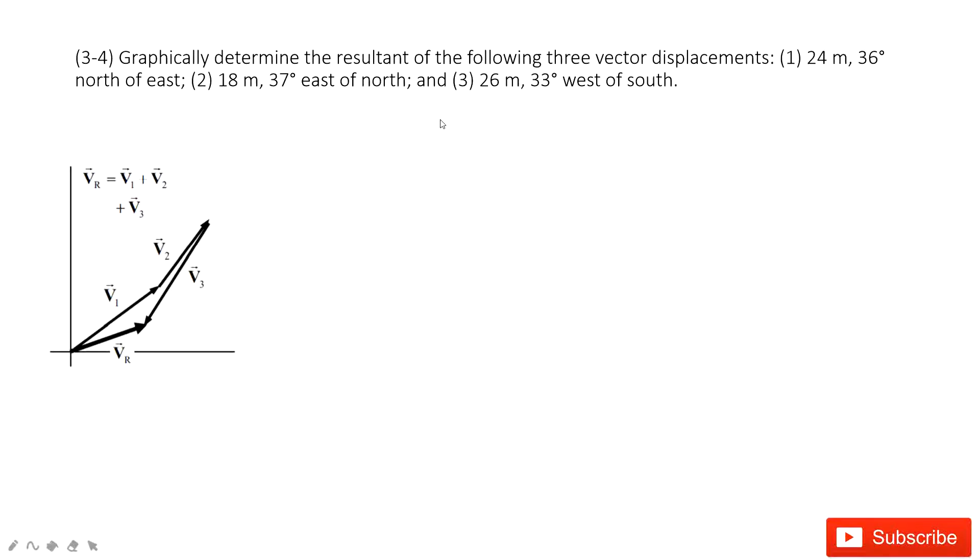This is the first one. We have three vectors v1, v2, and v3. It tells us v1 is 24 meters, 36 degrees north of east. So we can draw it on this picture.